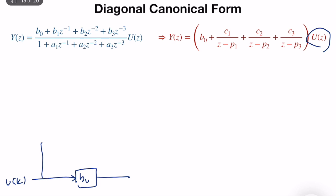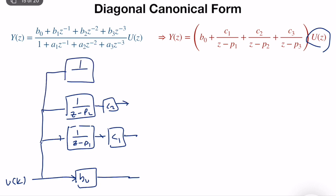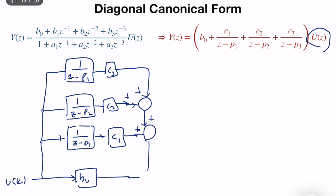We multiply the input with 1 over z minus p1, then multiply with c1. Similarly, we have another signal: multiply with 1 over z minus p2 and c2 to get the output. And likewise for z minus p3, multiplied with c3. The output y(k) is simply the summation of all four signals.